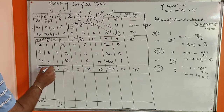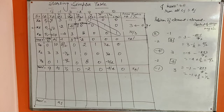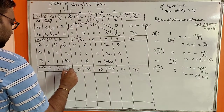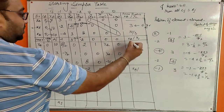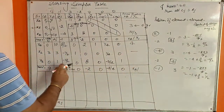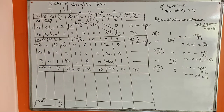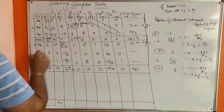We check whether any positive delta z exists. There is one positive delta z value of 1/2, so we must continue. The most positive delta z is 1/2, corresponding to x1 — this is the new incoming vector (ICV). We divide x_b values by the y1 column: 10 divided by 5/2 equals 4; the other elements are negative, so we skip them. The minimum ratio is 4, so x4 is the outgoing vector; x1 will take its place. The intersection — element 5/2 — is the new key element.